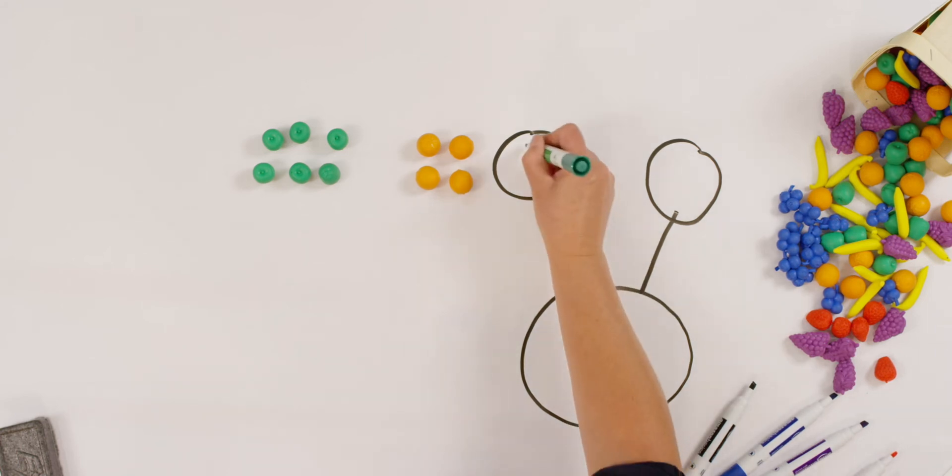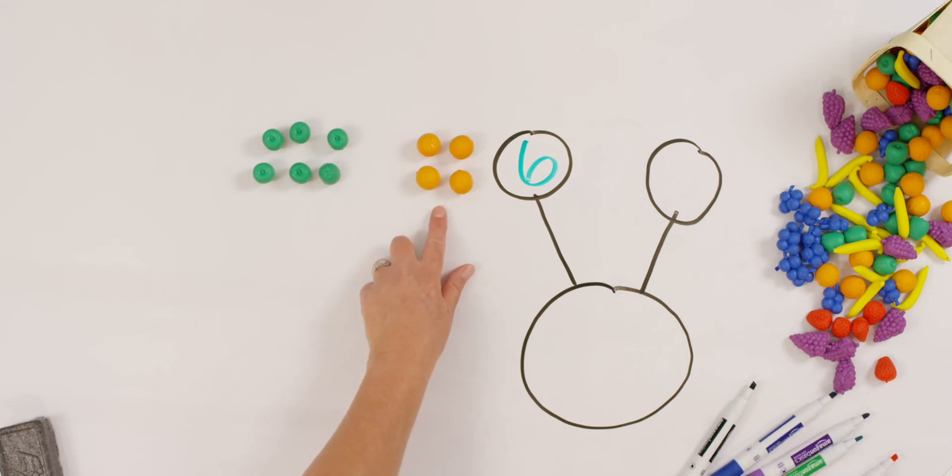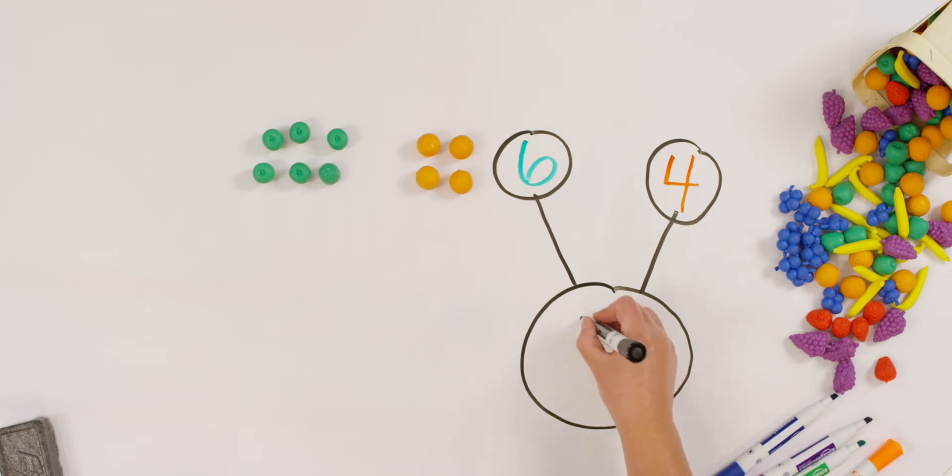So now let's fill it in. How many apples were there? Six. There's one. How many oranges did I have? Four. So you can write yours in too. Now, how much does six and four make all together? What did we say? Ten. Six and four make ten and four and six make ten.